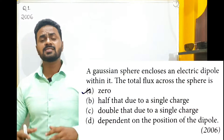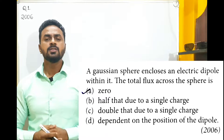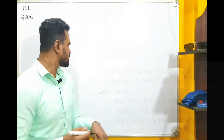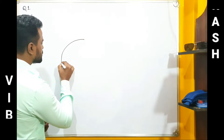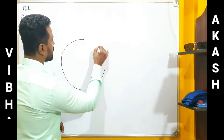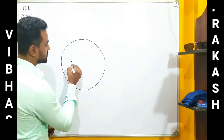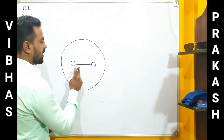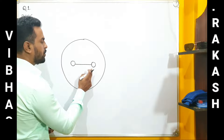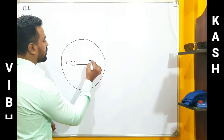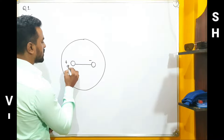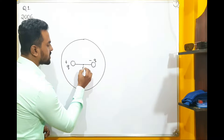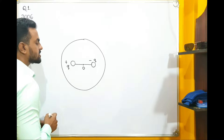A Gaussian surface encloses an electric dipole within it. The total flux across the sphere is — let us solve this. In the problem, a Gaussian sphere encloses an electric dipole. A dipole is a pair of equal and opposite charges. We can call these plus Q and minus Q, with the midpoint of the dipole taken as O.